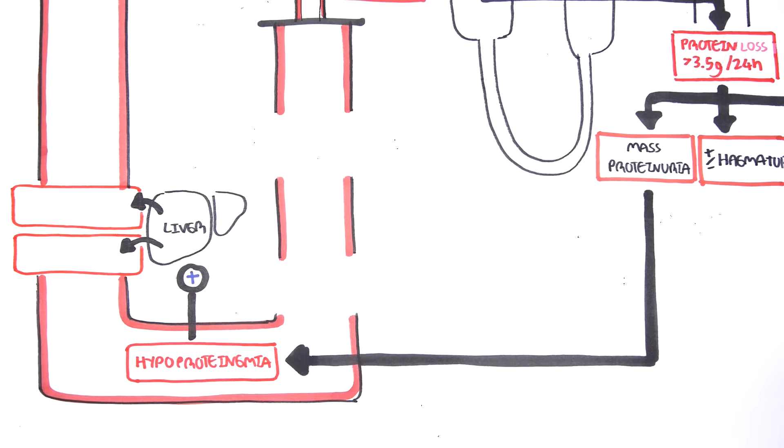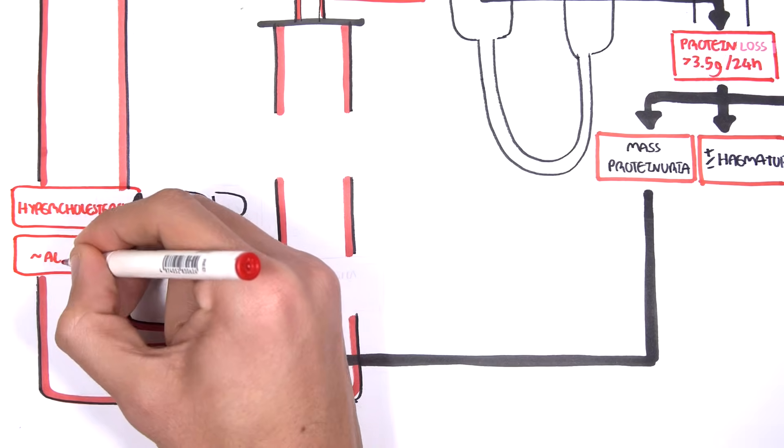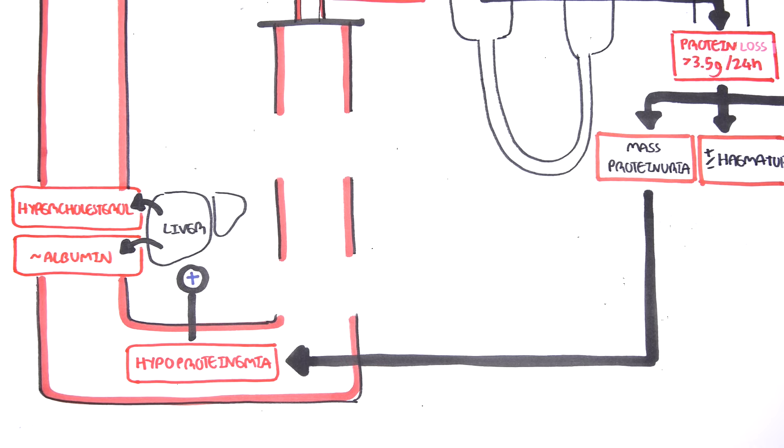The liver works on overdrive, producing not only proteins such as albumin, but also cholesterol. The cholesterol production is not necessary but occurs anyway, resulting in hypercholesterolemia.